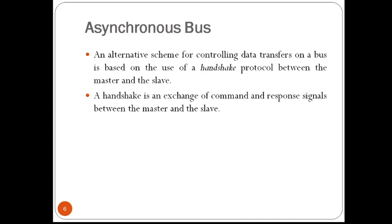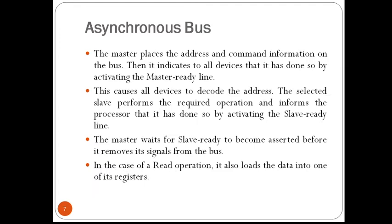A common clock cycle is replaced by two timing control signals: master ready and slave ready. The first is asserted by the master to indicate that it is ready for a transaction, and the second is a response from the slave. If master ready is set, it indicates the master is ready to send data; if slave ready is set, it indicates the slave is ready to receive data. In principle, a data transfer is controlled by a handshake protocol.